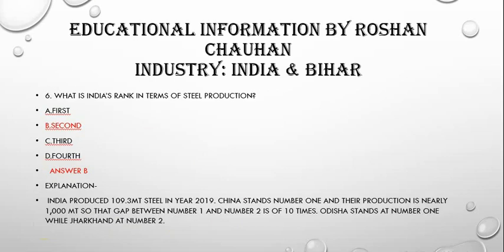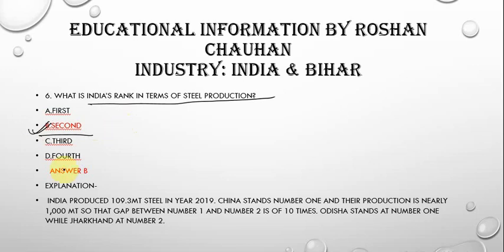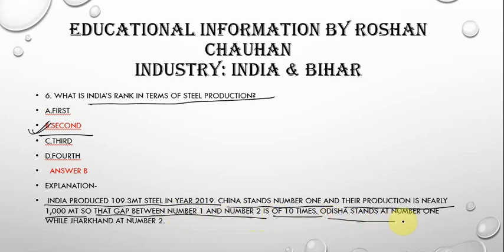The next question is: what is India's rank in terms of steel production? India is the 2nd largest producer of steel in the world. India produced 109.3 million tons of steel in 2019. China stands number 1, with production of nearly 1000 million tons — a gap of 10 times between number 1 and number 2.